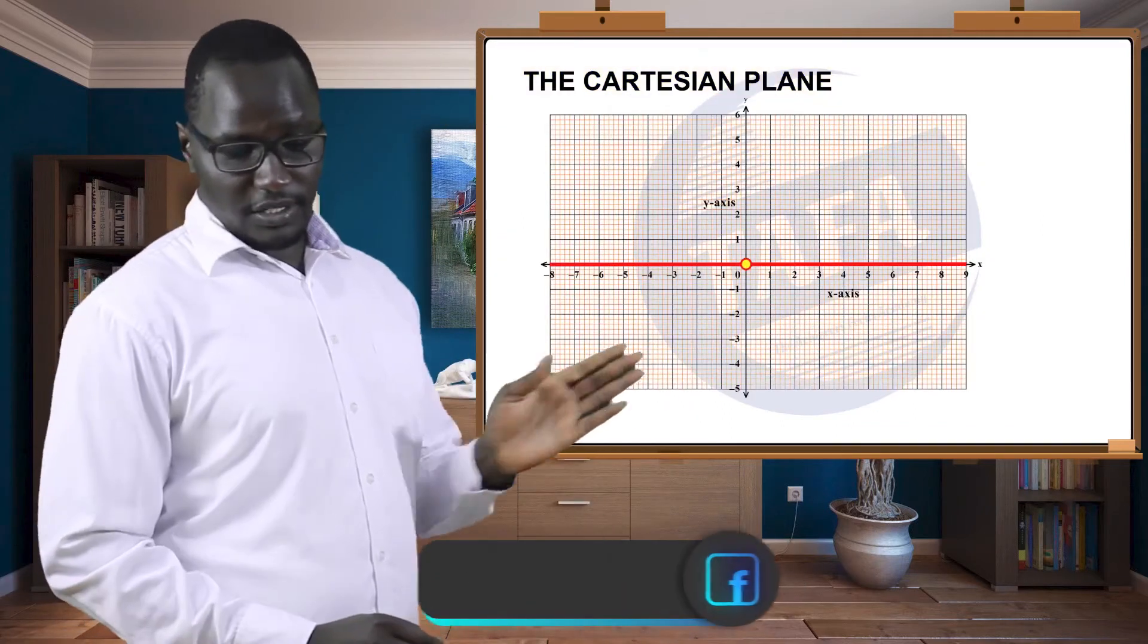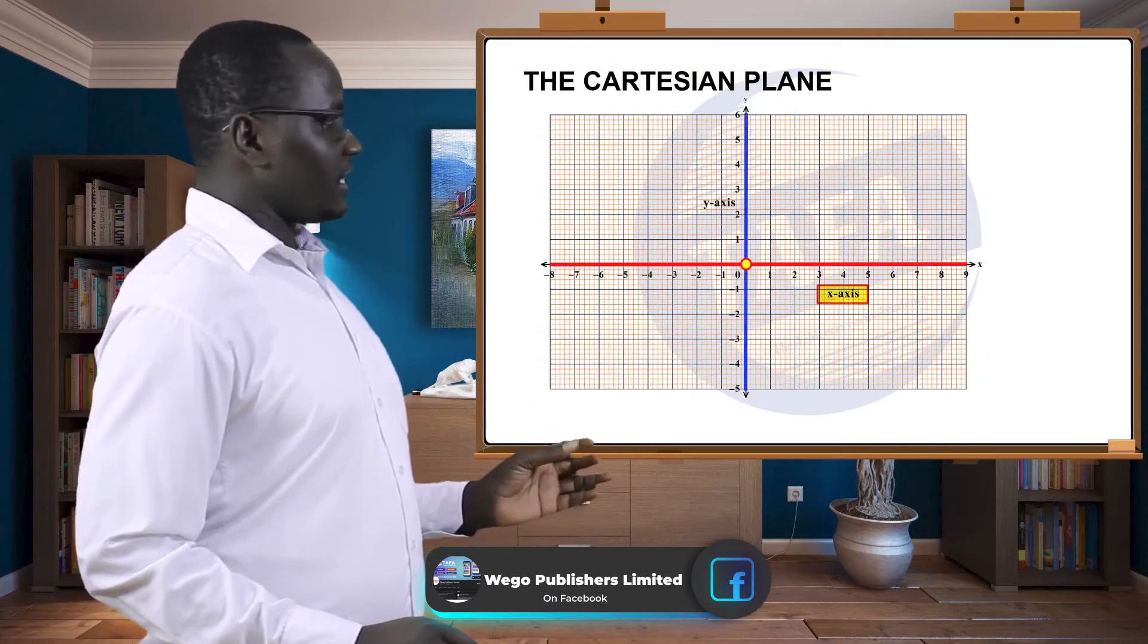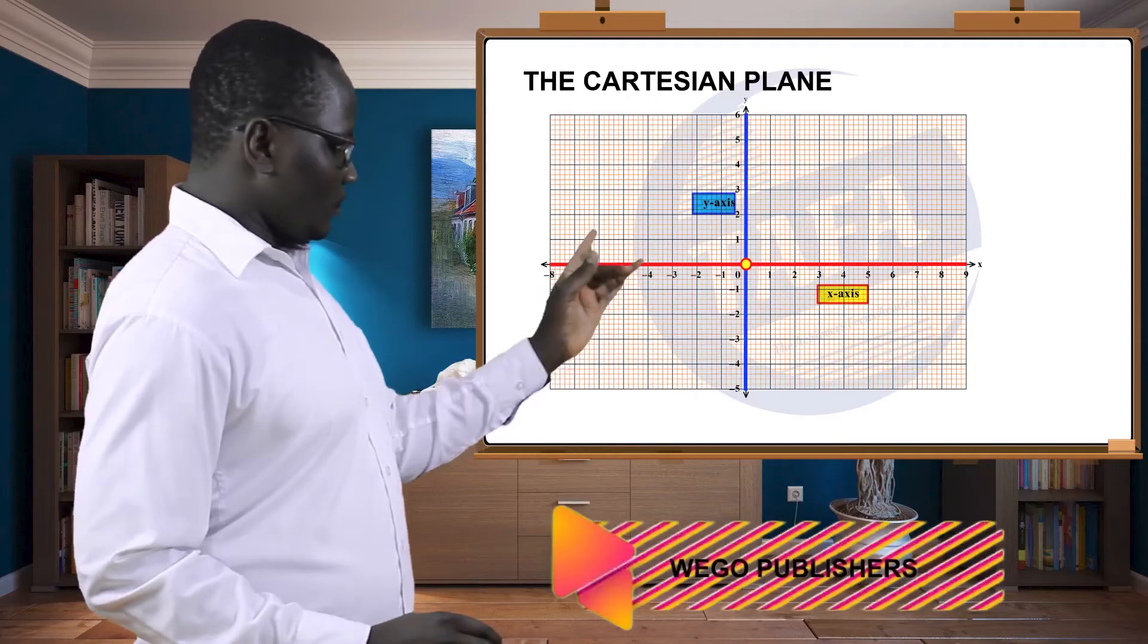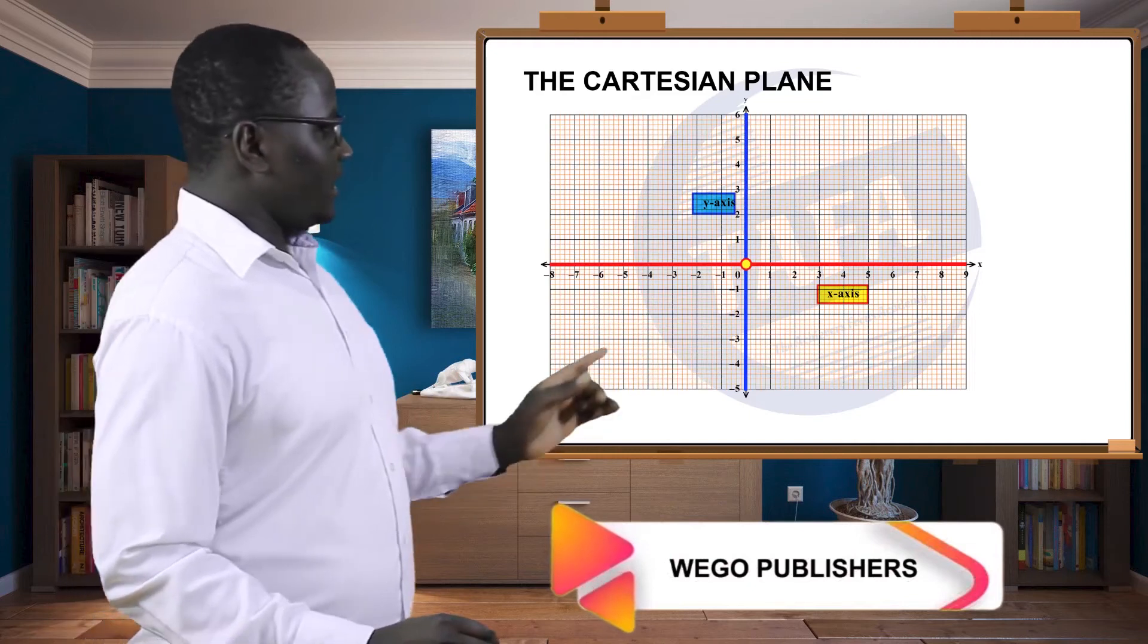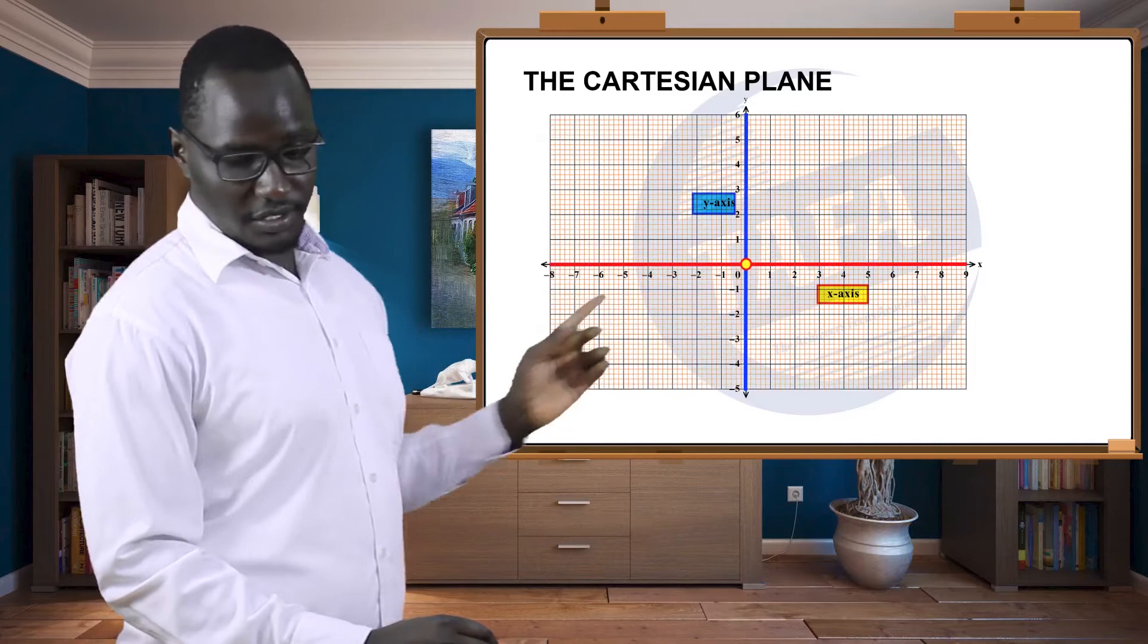One of the lines is drawn horizontally and is called the x-axis, and the other one is drawn vertically and is called the y-axis. This is shown in the figure here. You can see the y-axis is vertical, the x-axis is horizontal.